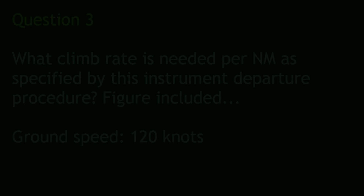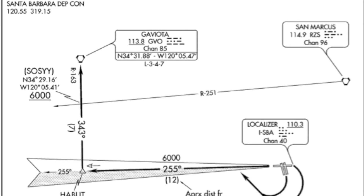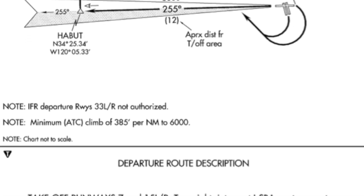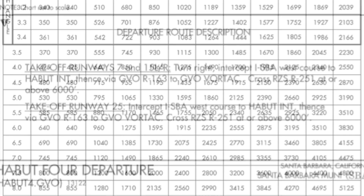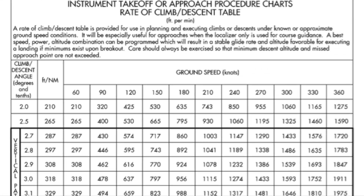I think I like the first question better with less work involved. But why not make it worse by adding even more questions with math problems? Here is another one for practice, this time with instrument departure procedures. With this question, we were given a ground speed of 120 knots along with two figures: one being the departure procedure and the other being the rate of climb or descent table that we are already familiar with.